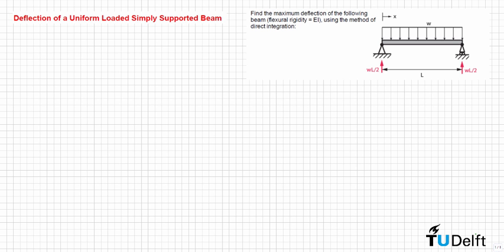In this problem we need to find the maximum deflection of a beam with flexural rigidity equal to EI, using the method of direct integration. This beam is simply supported with two pin supports, and we have a uniform load with load intensity equal to w. The reaction forces at the supports are given — they are equal to wL divided by 2.